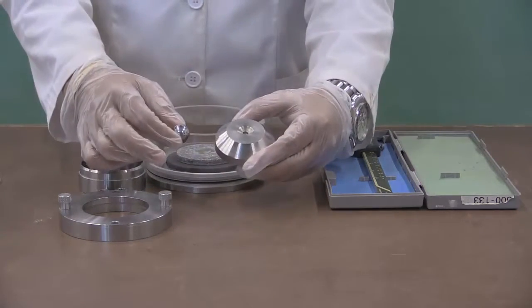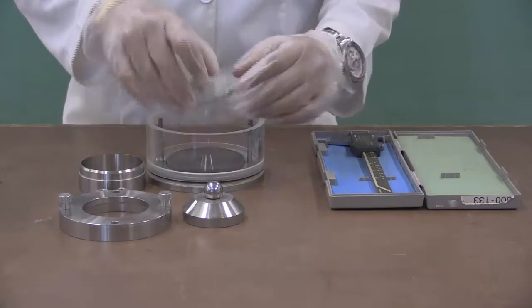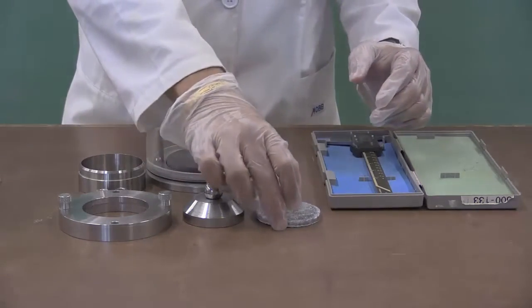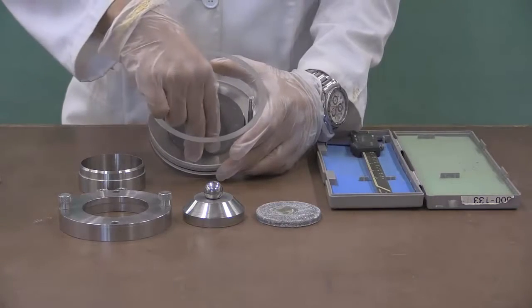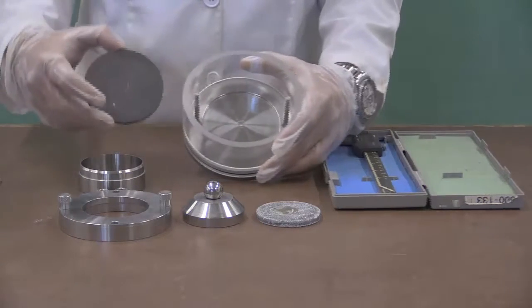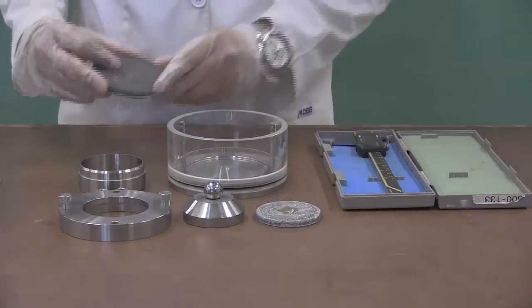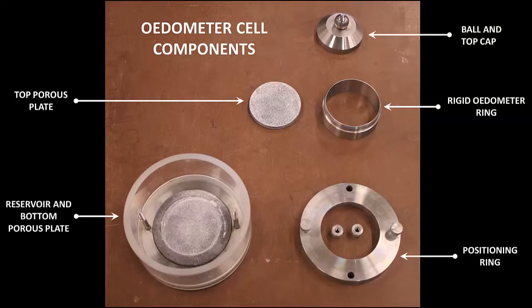Next, take the ball and top cap out. Then, you will be left with the top porous plate and the larger bottom porous plate. Take a moment to identify the components of the odometer cell.